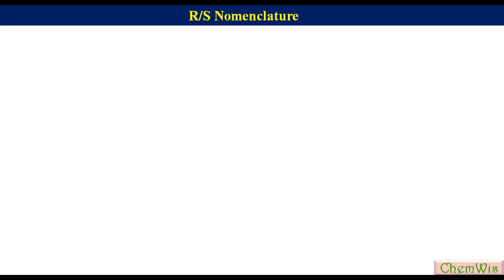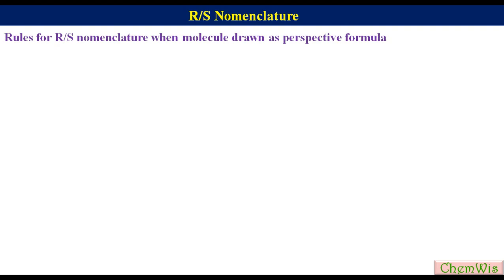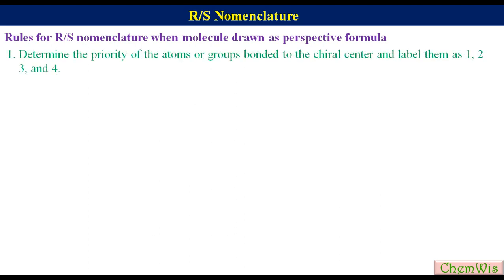Now first we will discuss rules for R and S nomenclature when the molecule is drawn as a perspective formula. The steps for the determination of R and S configuration are: determine the priority of atoms or groups bonded to the chiral center and label them as 1, 2, 3, and 4.